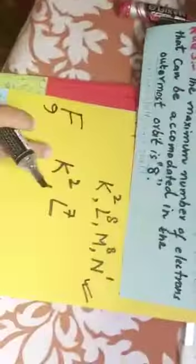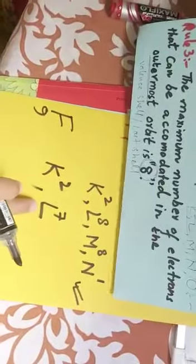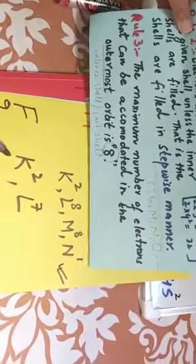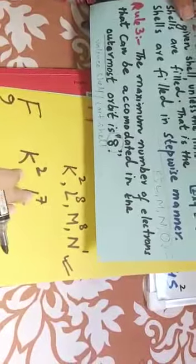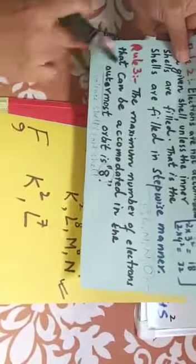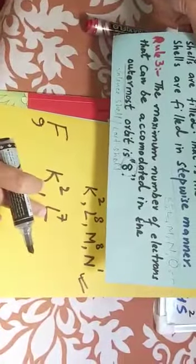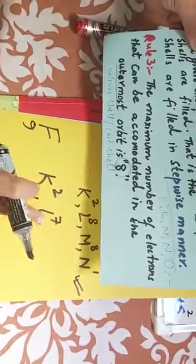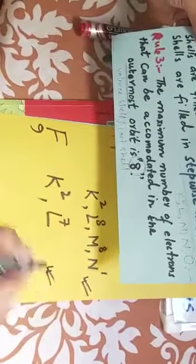Rule number 1, 2N squared. K can hold 2, L can hold maximum 8. But right now require how many electrons? 9, you are going to distribute 9 electrons. So K holds 2, L holds 7 electrons. Second rule, stepwise manner. First shell, then second shell. Third rule is saying last orbit not exceed by 8. So these three rules are valid here.